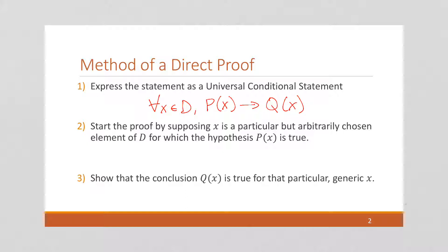Step 2, we want to suppose that X is a particular but arbitrarily chosen element of D for which the hypothesis is true. Remember, that is, we want to assume this first part of the equation. Suppose X is an element of D and P of X is true.